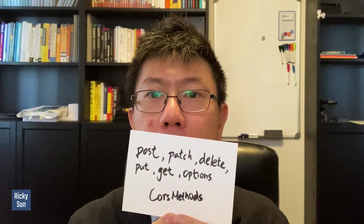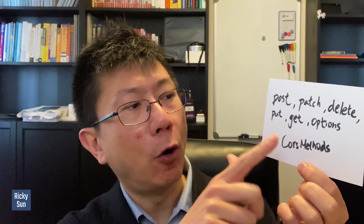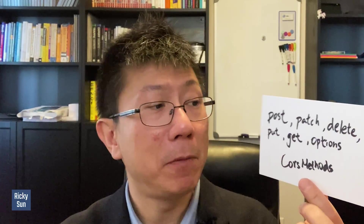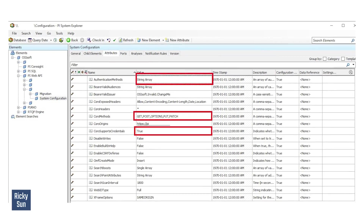The other setting is CORS Support Credentials — set it to true, as it was false by default. You also need to put in the CORS methods. Originally in the configuration database it will only have GET as an option, but now you have to add POST, PATCH, DELETE, and PUT. It depends on what you need, but if you are starting to use PI Web API, at the minimum you need GET and POST. So add those in as CORS methods. Once you've done those three things in the configuration database, you can start using PI Web API.